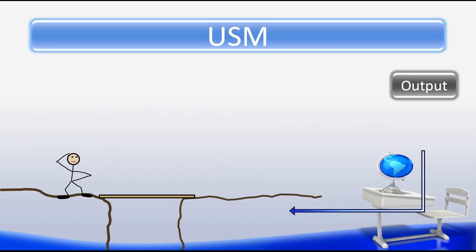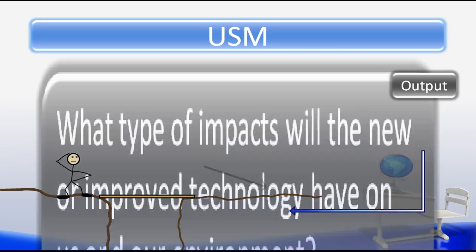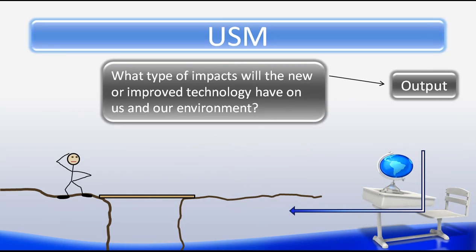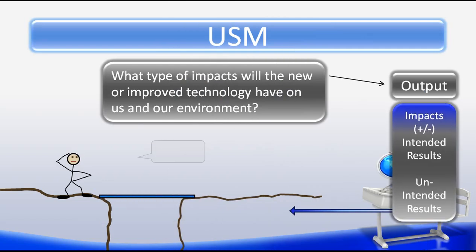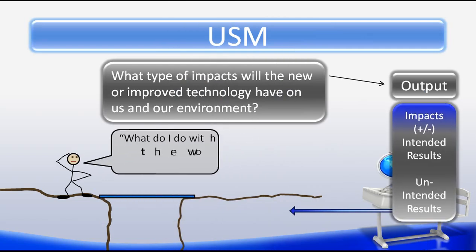The output tells us a lot about our solution. The most obvious is: did we achieve our goal of solving the stated problem? If so, what impacts did this have on us and our environment? Were the impacts positive and benefit all? Or was there a mix of positive and negative impacts? Or were all impacts negative? Did the final product match our intended goal, or were there any unintended results? These are some of the questions we answer during and after the testing process.